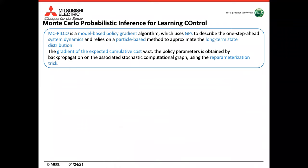We propose the algorithm called Monte Carlo Probabilistic Inference for Learning Control. MCPILCO is a model-based policy gradient algorithm which uses Gaussian processes to model the system's dynamics and relies on a particle-based method to approximate the long-term state distribution. The gradient of the expected cumulative cost with respect to the policy parameters is obtained by backpropagation on the associated stochastic computational graph using the reparameterization trick.